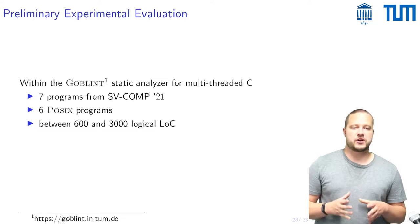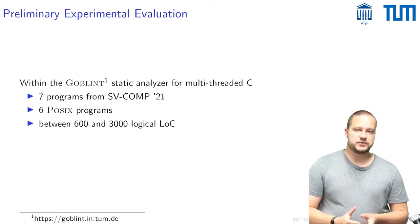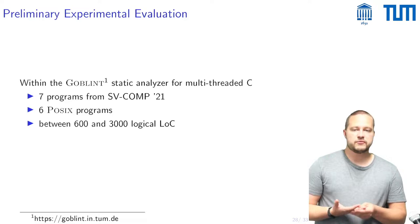Having formalized all of these analyses in a common framework then also allowed us to do a preliminary experimental evaluation which we did within the Goblint static analyzer for multi-threaded C. In total we have looked at 13 programs here that range between 600 and 3000 lines of code.